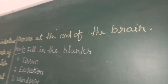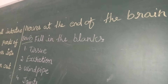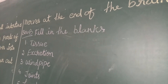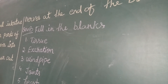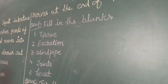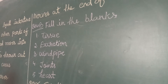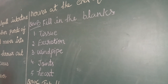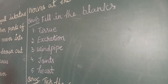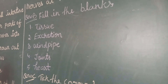Question number 1: Cells of the same size, shape, and function are grouped together to form a tissue. Number 2: Excretion is the process of removal of waste from the organs. Number 3: The air moves down through the windpipe and reaches our lungs. Number 4: Joints allow us to bend the parts of our body. Number 5: The heart is the major organ of the circulatory system.